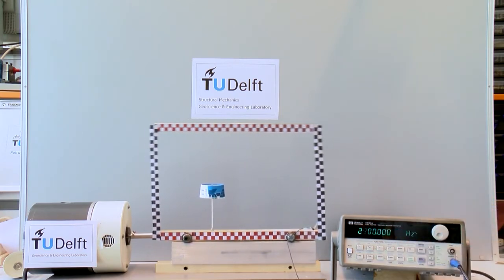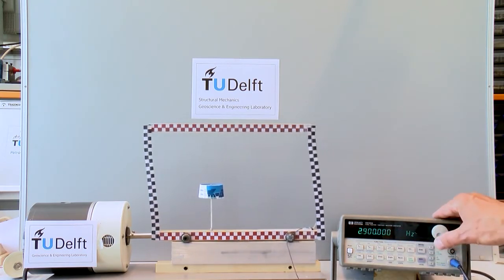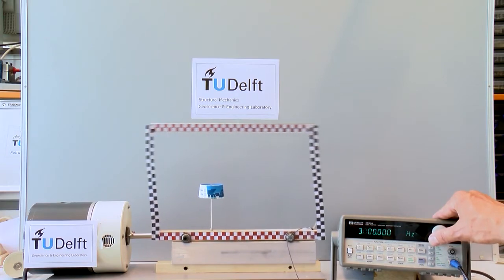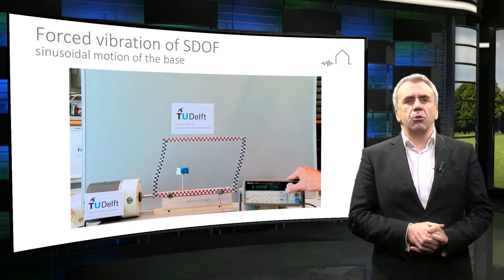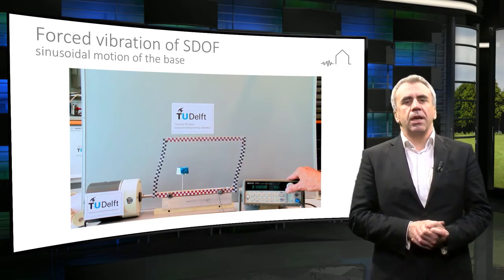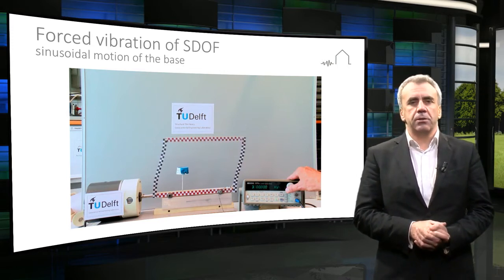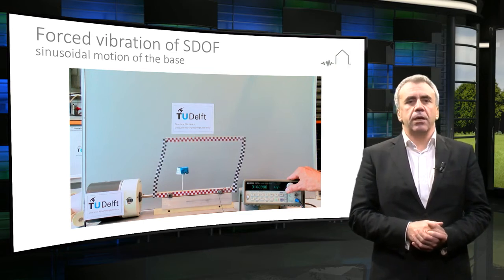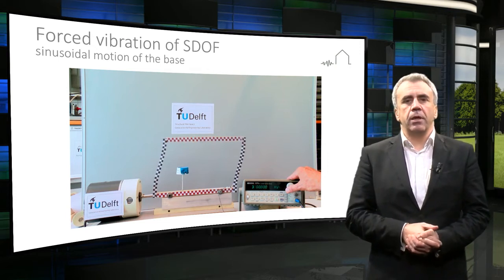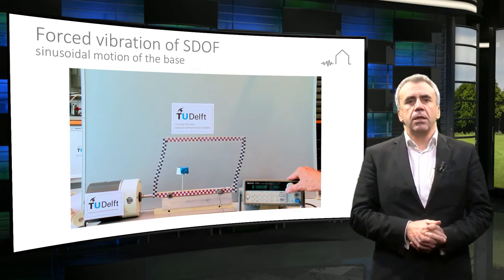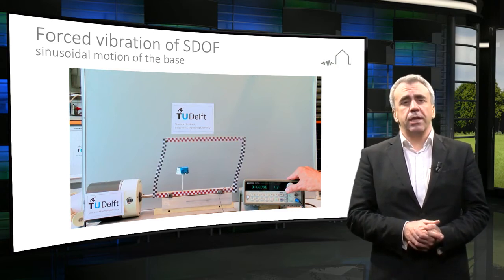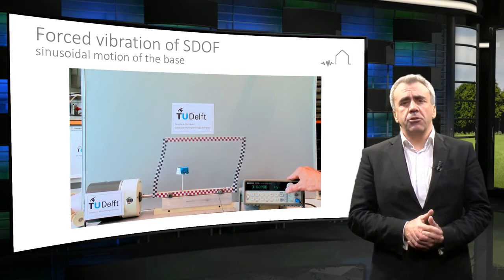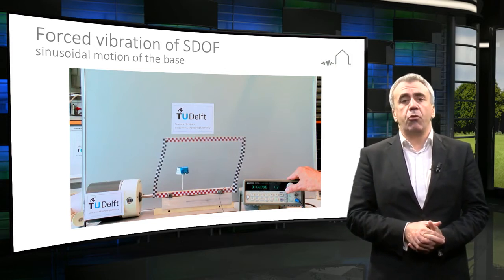In the experiment shown in the movie, we do not reproduce the realistic motion of the ground, which is quite complex, but we show how the house responds to a sinusoidal motion of its base that takes place at different frequencies. The house tends to vibrate at the frequency of the base — the base vibrates and the house takes the same frequency. Such vibrations are called forced vibrations.